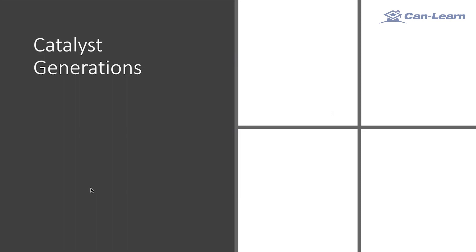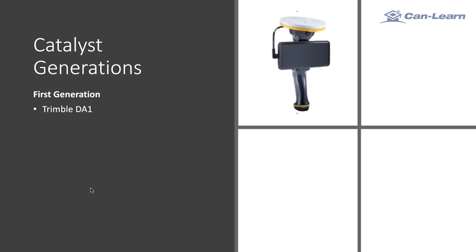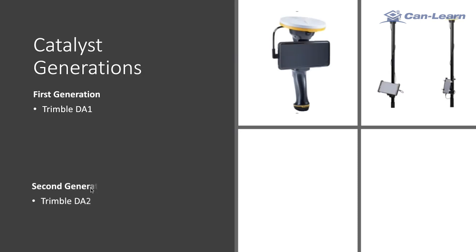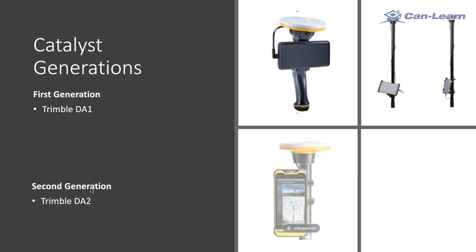So far, we have two Catalyst generations. The first generation is the Tramble DE1. The second generation is the Tramble DE2.